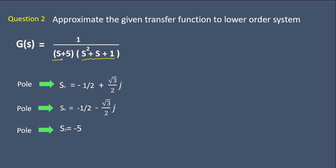We also have one real pole. Setting s + 5 = 0 gives the real pole at s = −5. So in total we have three poles, making this a third order system. The question asks us to approximate it to a lower order — second or first order.